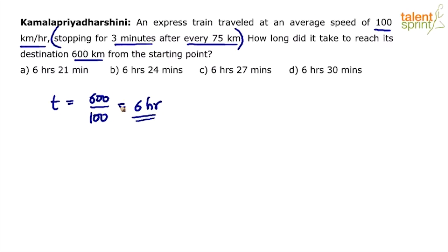But then there is a catch. The train stops for 3 minutes after every 75 km. So let us include this in our solution now. So far, what we have calculated is the travel time. Now we have to calculate the stoppage time.